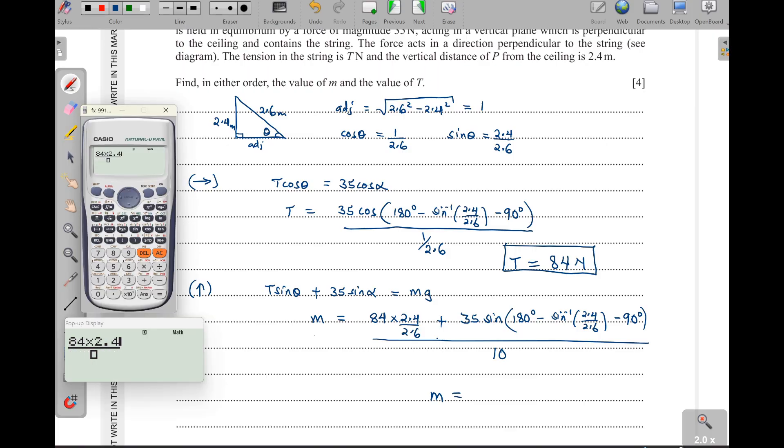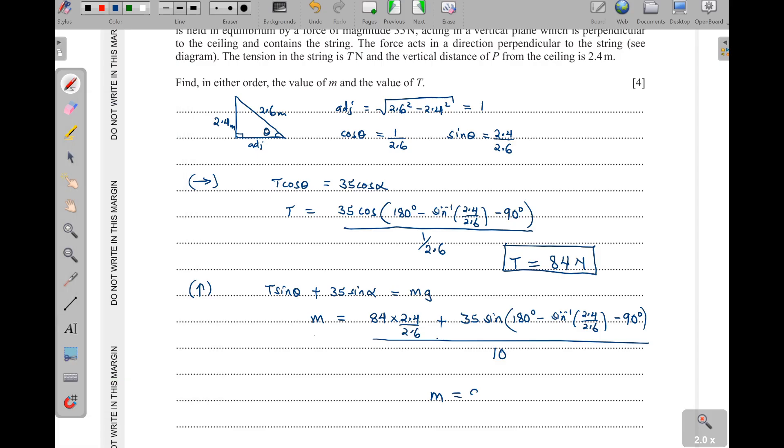84 times 2.4 out of 2.6, then plus 35 sine of 90 minus the arc sine of 2.4 out of 2.6, 2.6. Then down here we shall put 10. We get 91 over 10, which is the same as 9.1. So 9.1 kilograms. That is the mass of that particle.